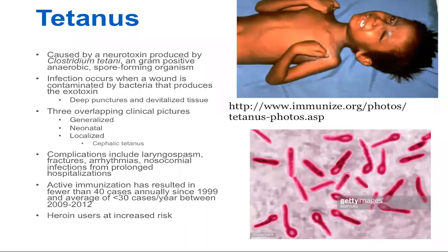This is another toxin-mediated disease, so the symptoms are due to an exoneurotoxin that's produced by the gram-positive anaerobic spore-forming bacteria shown in the bottom photo. The bacteria itself is very fragile and doesn't survive in oxygen, so it requires an anaerobic media, but the spores are very hardy and are even able to survive autoclaving.